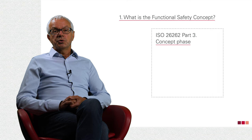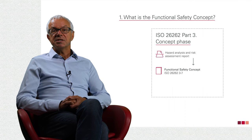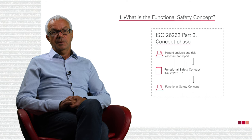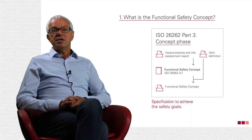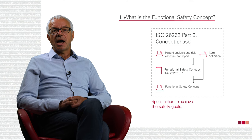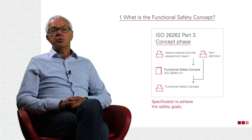Part 3 of ISO 26262 is about the functional safety concept. Under clause 7, there are requirements, the result of which is a work product simply called the functional safety concept. Take a closer look at the definition of this work product: the functional safety concept must provide a specification of how goals will be achieved for a specific item — something like a feature that the carmaker wants to install in a vehicle, for example adaptive cruise control. The expectation is that the functional safety concept provides sufficient and convincing arguments as to how safety goals are met.